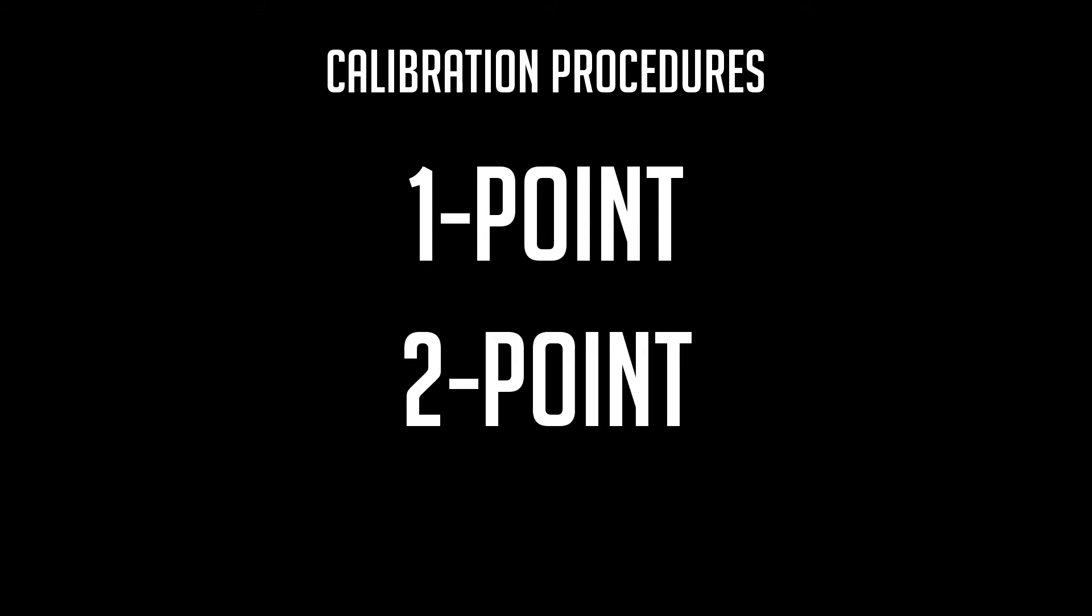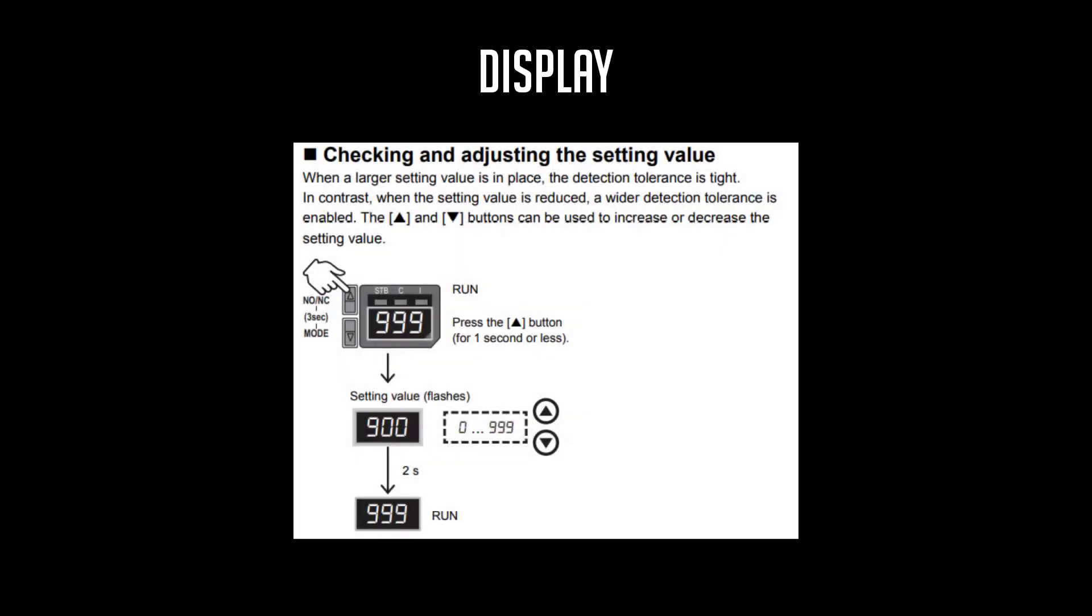Next, I'll be demonstrating how to calibrate the LRW 500 with the one point teach method, as well as the two point teach method. Once calibrated, the LRW will display some values. These values are a percent match to the reference color that you originally taught the LRW. So a 999 number is a 99.9% match to the original reference color.